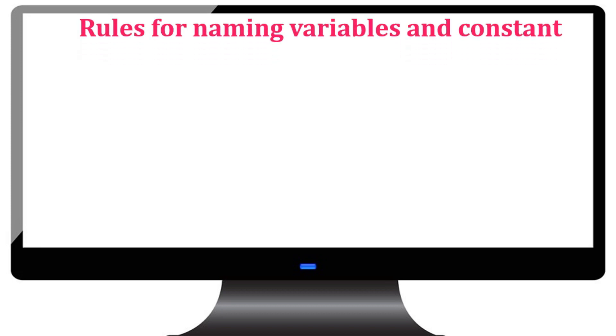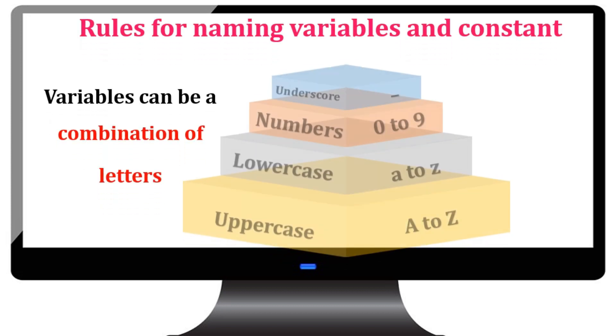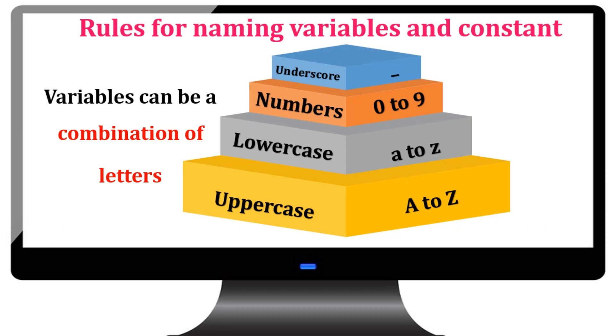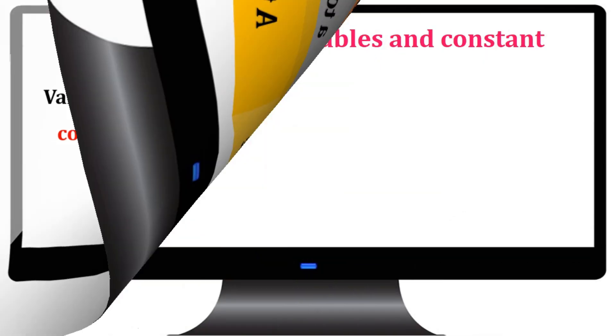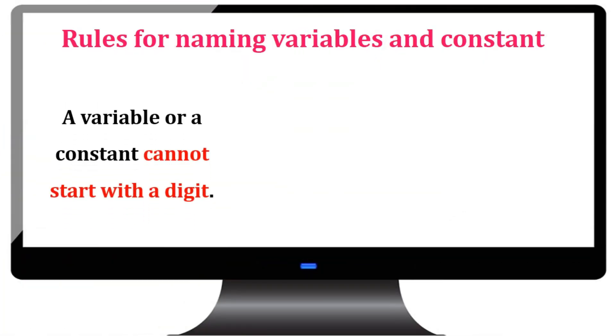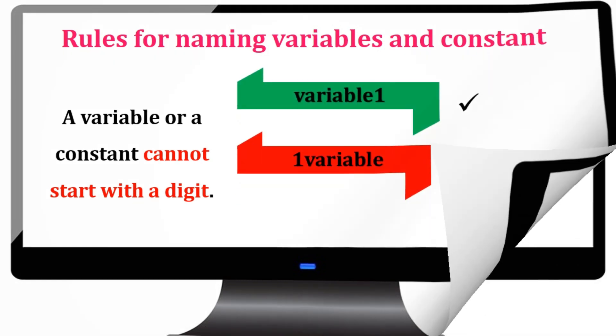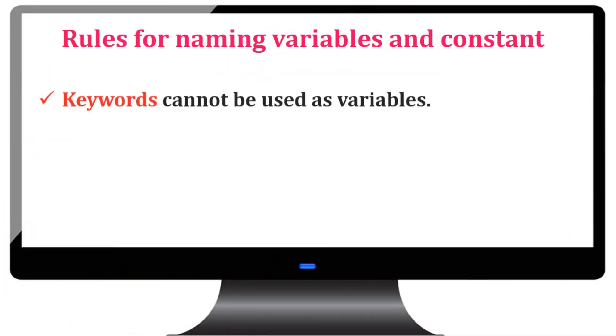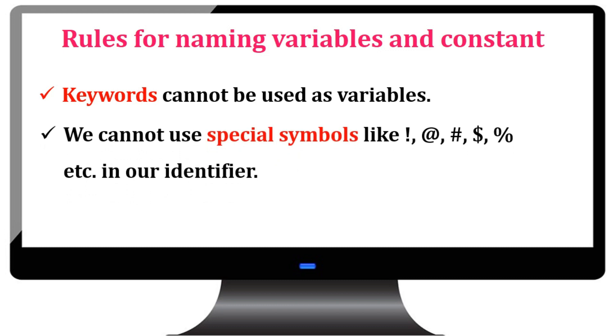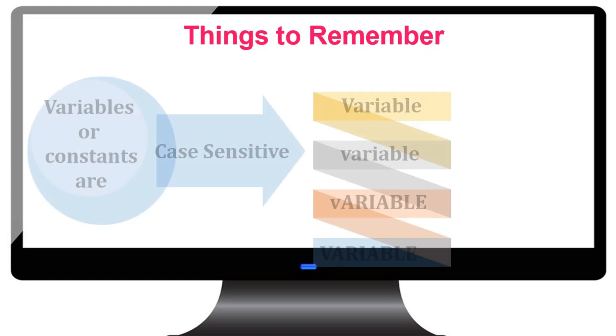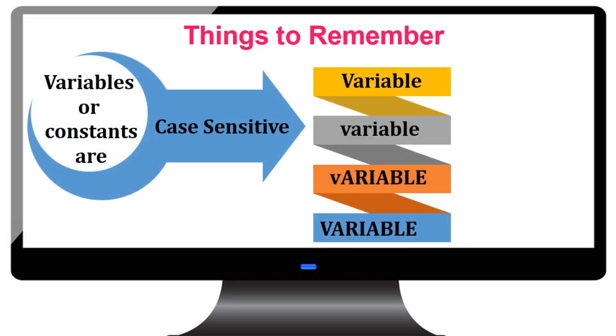A variable or a constant can be a combination of alphabets, numbers or underscore symbol. A variable or a constant cannot start with a digit. Keywords cannot be used as a variable or a constant. We cannot use any special symbols for declaring a variable or a constant. Variables or constants are case sensitive. The same variable name declared with different cases will be treated as different.